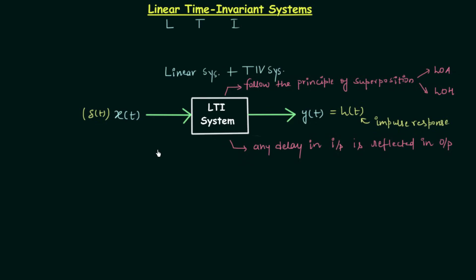If you want to calculate the impulse response using the relationship between output and input, it will be difficult in the time domain. That's why we go to the frequency domain using the Laplace transform. You can also use the Fourier transform, but in this chapter we will mainly use the Laplace transform.